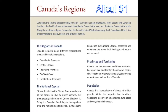The National Capital. Ottawa, located on the Ottawa River, was chosen as the capital in 1857 by Queen Victoria, the great-great-grandmother of Queen Elizabeth II. Today it is Canada's fourth largest metropolitan area. The National Capital Region, 4,700 square kilometers surrounding Ottawa, preserves and enhances the area's built heritage and natural environment.